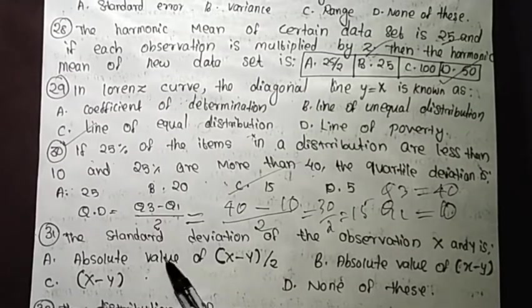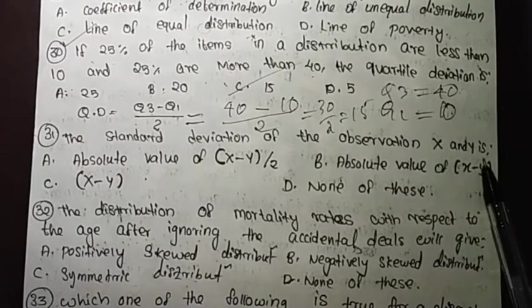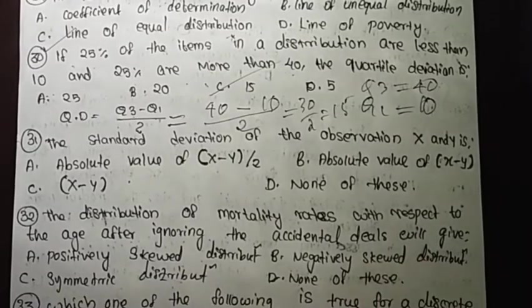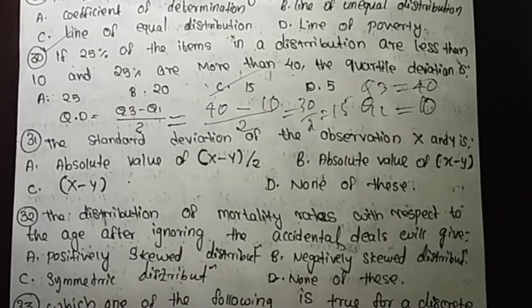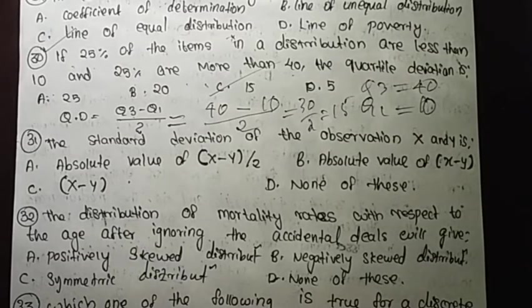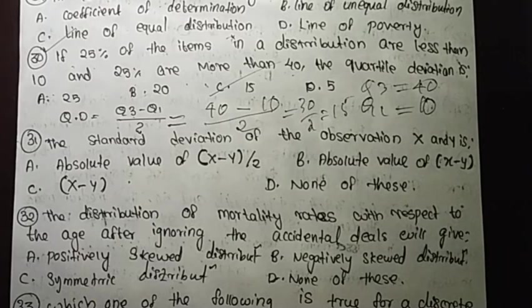The standard deviation of the observations x and y: when we consider the absolute value of x minus y by 2, that gives the standard deviation.